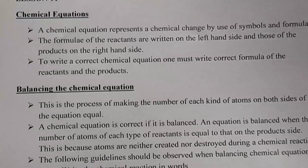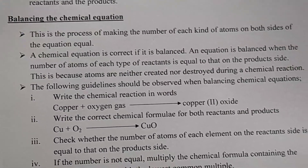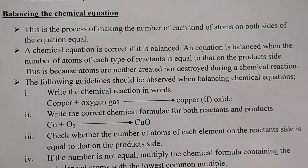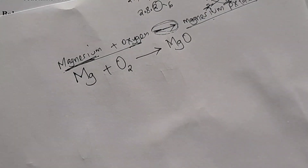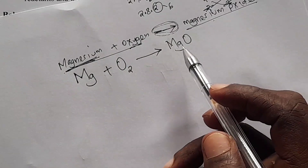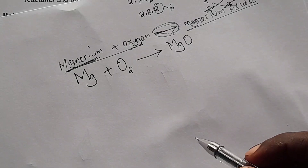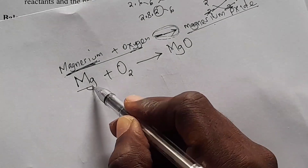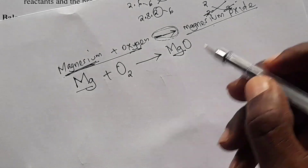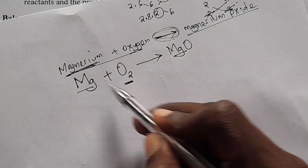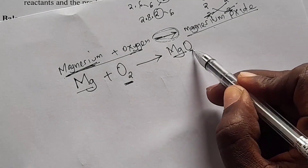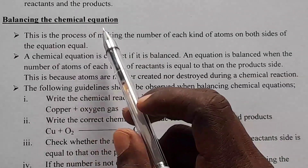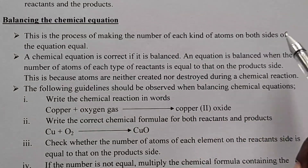Now let's look at balancing a chemical equation. Balancing a chemical equation is the process of making the number of each kind of atom on both sides of the equation equal. For example, with magnesium reacting with oxygen giving magnesium oxide, the equation is not balanced — because while magnesium has one atom on each side, oxygen has two on the left-hand side (reactant side) but only one on the right-hand side (product side).